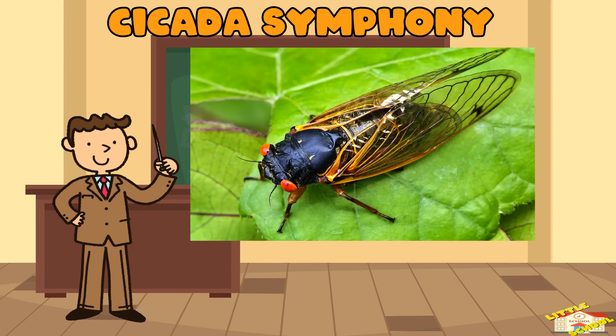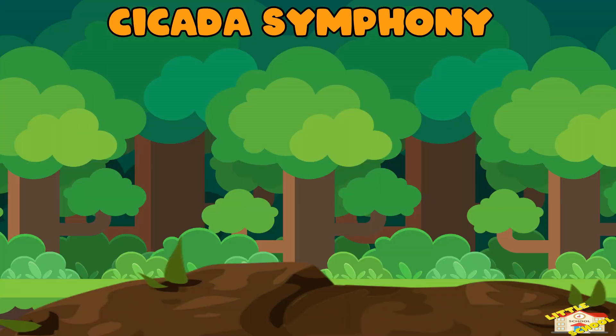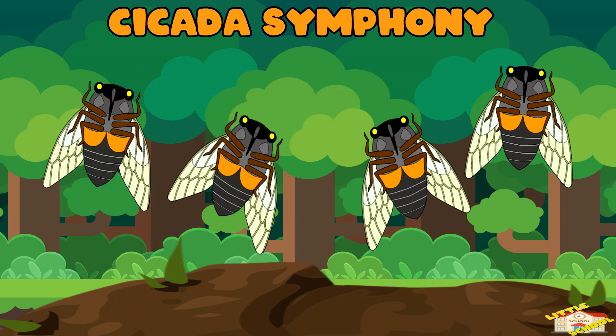Cicada symphony: periodical cicadas undergo a massive synchronized molting event. They emerge from the ground in large numbers, molting into their adult form, and create a symphony of mating calls.